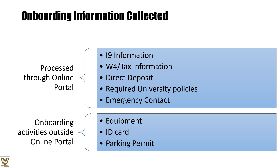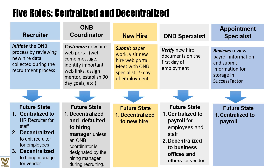The onboarding process covers I-9 information, tax information, employment and resident visa details for non-residents, direct deposit, university and organizational policies, emergency contacts, and onboarding activities. There are essentially five roles involved. The recruiter role initiates the onboarding process by reviewing the new hire data.